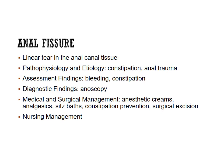An anal fissure is a tear in the anal area from constipation or anal trauma. The patient will have bleeding and may be examined with an anoscope — a small circular visualization device used by the gastroenterologist. Treatment includes topical creams, sitz baths, and possibly surgical excision if the fissure is large enough.